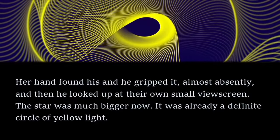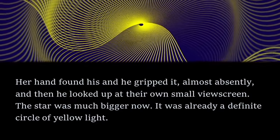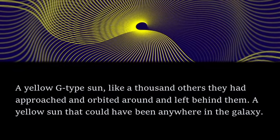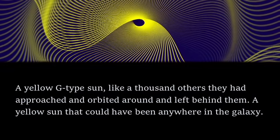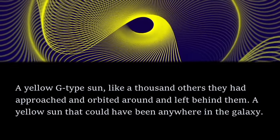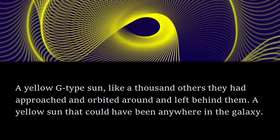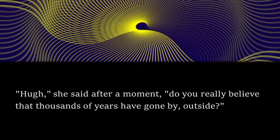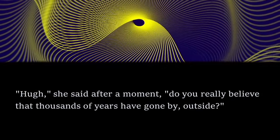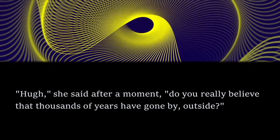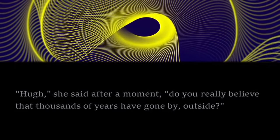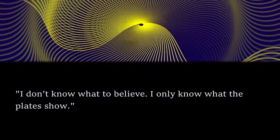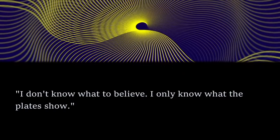The star was much bigger now. It was already a definite circle of yellow light. A yellow G-type sun, like a thousand others they had approached and orbited around and left behind them. A yellow sun that could have been anywhere in the galaxy. Hugh, she said after a moment, do you really believe that thousands of years have gone by outside? I don't know what to believe. I only know what the plates show.